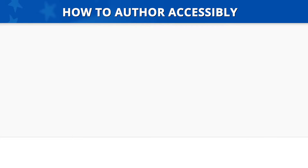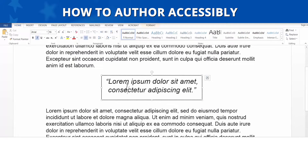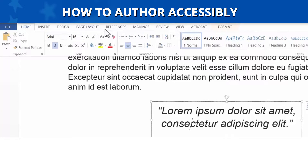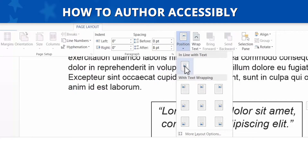How to Author Accessibly: To author accessibly, click on a text box in your document. In the Navigation Ribbon, go to the Page Layout tab and in the Arrange section, select Position. Choose the option for In Line with Text.